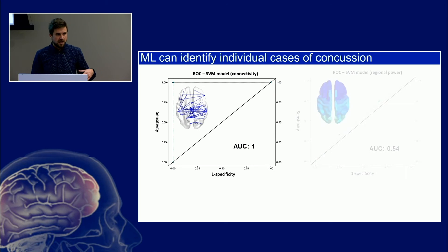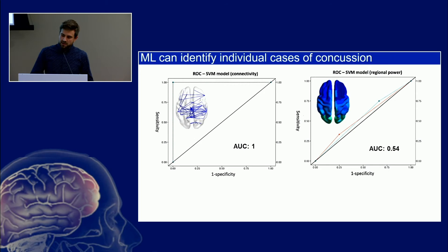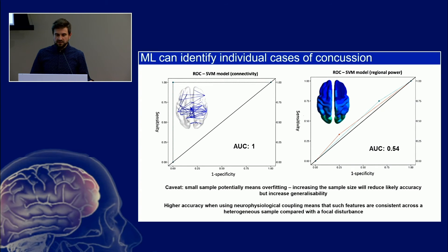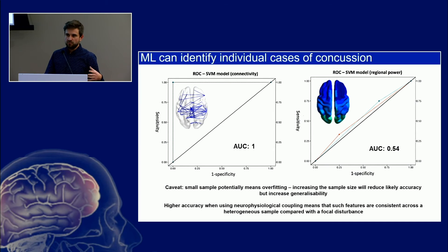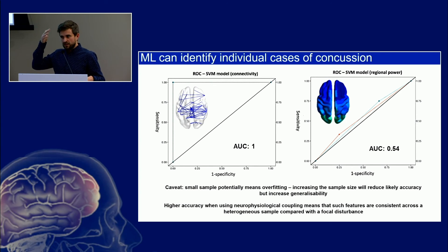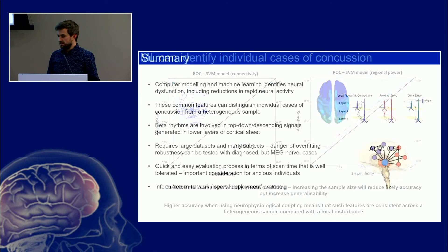We used a similar pipeline to test the regional changes in dysfunction, and we can operate just about above chance using that approach. There are caveats: this is a relatively small sample size, bound to be biased, with problems of overfitting in feature selection. As we increase the data set from our 27 concussed cases and about 25 controls, we're likely to see a reduction in accuracy, but it would increase generalizability to naive cases. Higher accuracy is achieved when we think of brain injury as disturbing a network — disturbing large-scale circuits — rather than being related to a focal disturbance, which is likely to be very heterogeneous across the group.